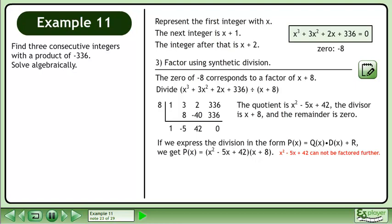If we express the division in the form P(x) = Q(x)D(x) + R, we get P(x) = (x² - 5x + 42)(x + 8).